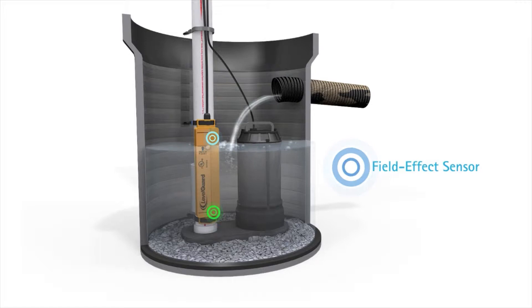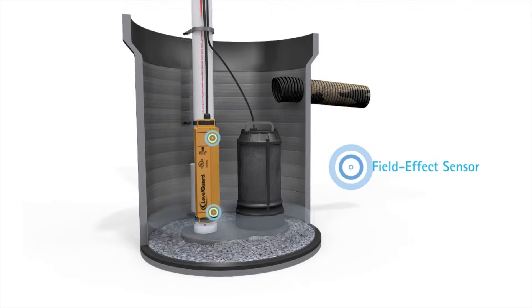Level Guard sewage and sump pump switches are designed with three field effect electronic sensors that monitor for the presence of fluids. Once upper and lower level sensors detect the presence of water, a solid state switch sends power to the pump via piggyback plug.